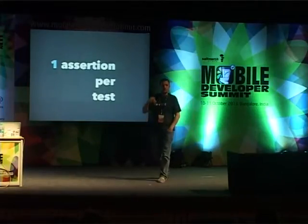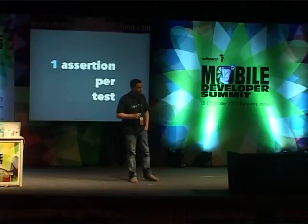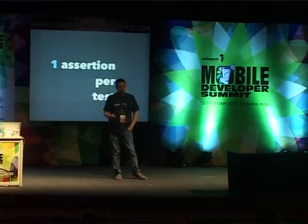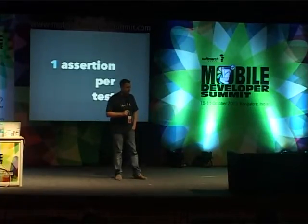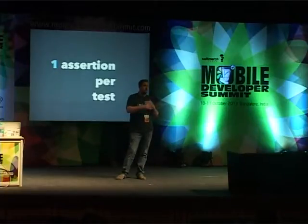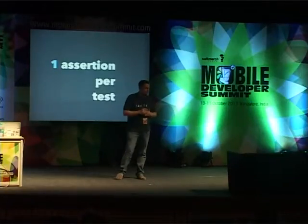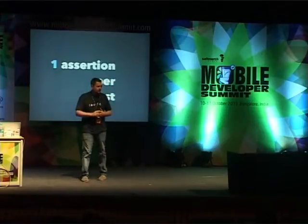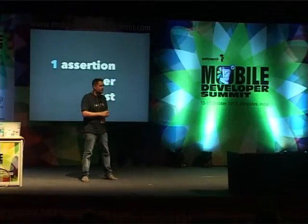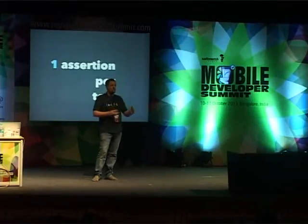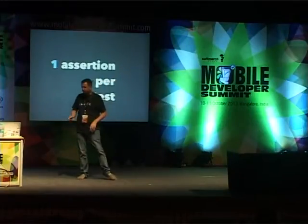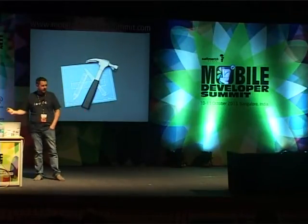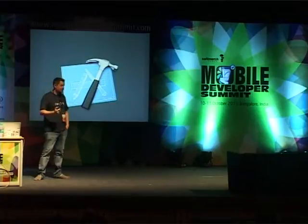I really strive to make one assertion per test. Occasionally I'll add a second assertion to validate a precondition, but I really think it's valuable to have one assertion per test. This goes back to the driver that as soon as a test fails, you should know why it failed. So let's talk a little bit about Xcode and how it helps us with this.